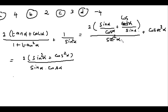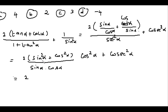We have 1 divided by sec²α, since 1 + tan²α = sec²α. After simplification with 1 divided by sin²α, we get cos α divided by sin α — which is cot α. So the expression inside the square root becomes 2 times cot α plus cosecant squared α.